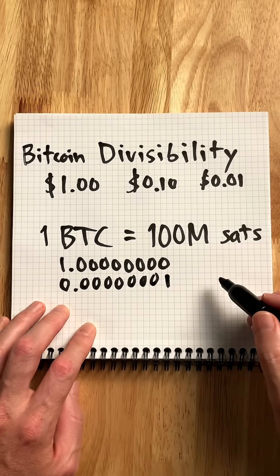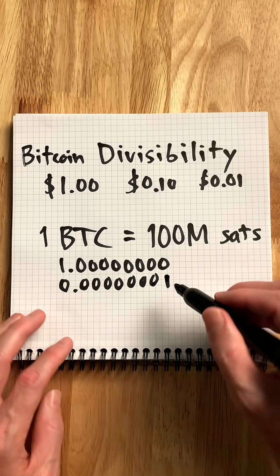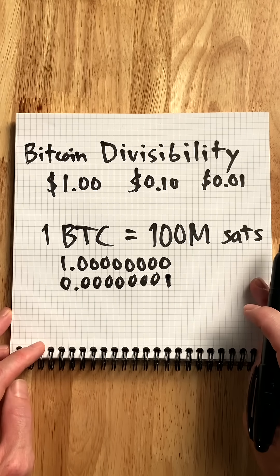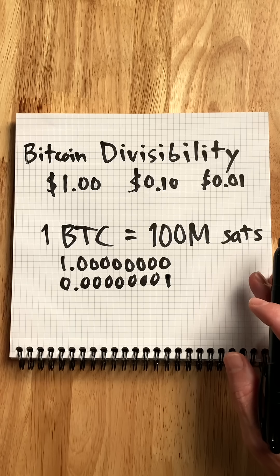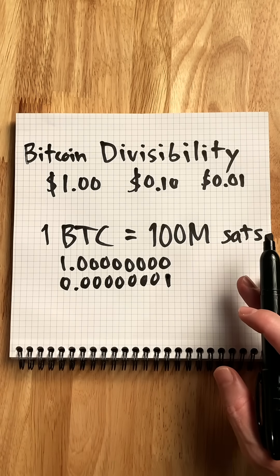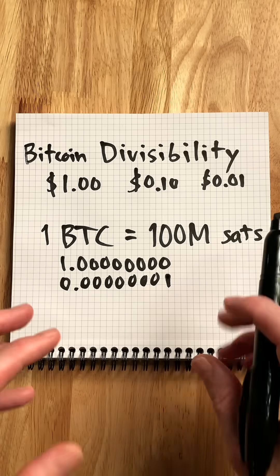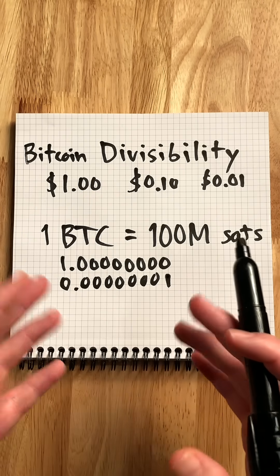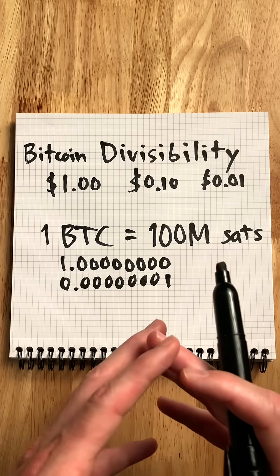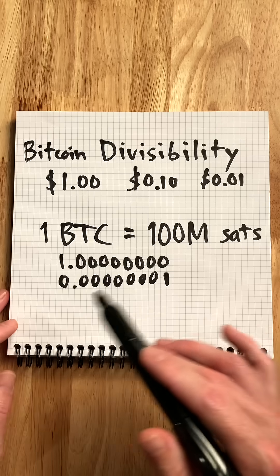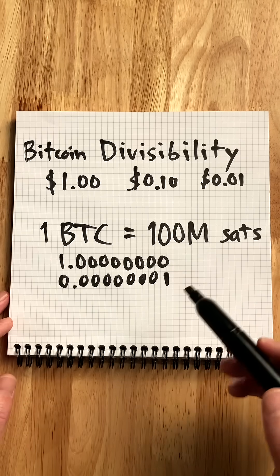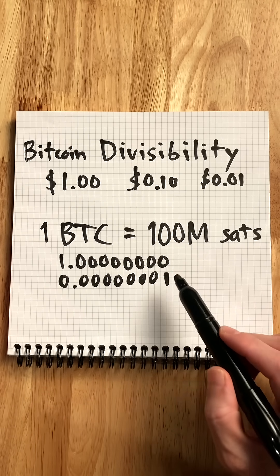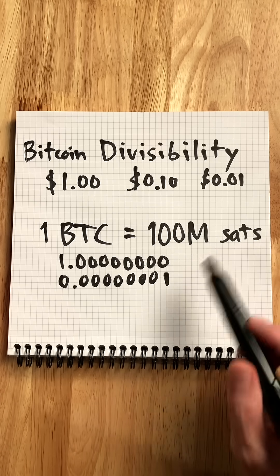Satoshi is the smallest atomic unit of Bitcoin. We can think of it like gigabytes — you don't have to have one full gigabyte to have a bit of information. You can build those small bits to add up to one full gigabyte, and you can add up those gigabytes to add up to a full terabyte. Since Bitcoin is monetary information, its currency is highly divisible into tiny little bits called Satoshis.